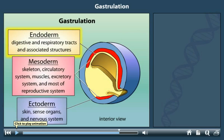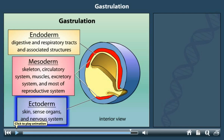The endoderm gives rise to the digestive and respiratory tracts and associated structures. The mesoderm gives rise to the skeleton, circulatory system, muscles, excretory system, and most of the reproductive system. The ectoderm gives rise to the skin, sense organs, and nervous system.